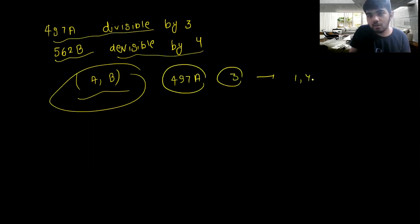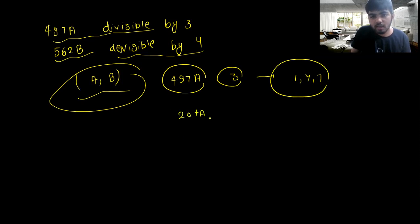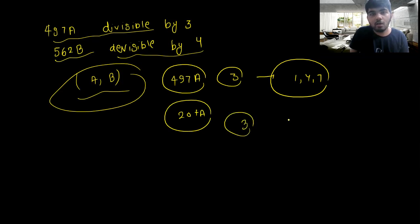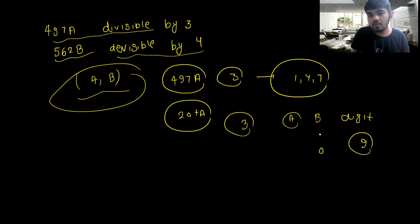The digit a can be 1, 4, or 7. Basically if you sum the digits — 4+9+7 = 20 — it must be divisible by 3. So a can take values 1, 4, or 7, giving 3 possible values.